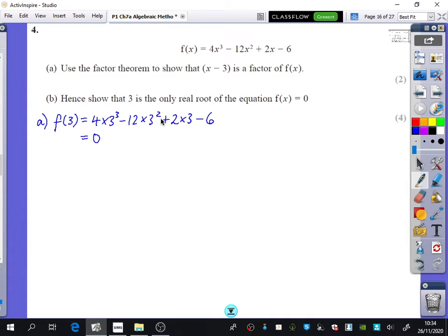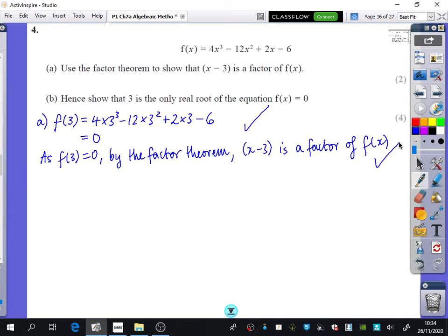But that's not the end of it. So you have to say, as f of 3 equals 0, by the factor theorem, x minus 3 is a factor of f of x. You do need that sentence. You get one mark, one mark. It's an easy mark. Just explain what you've done.